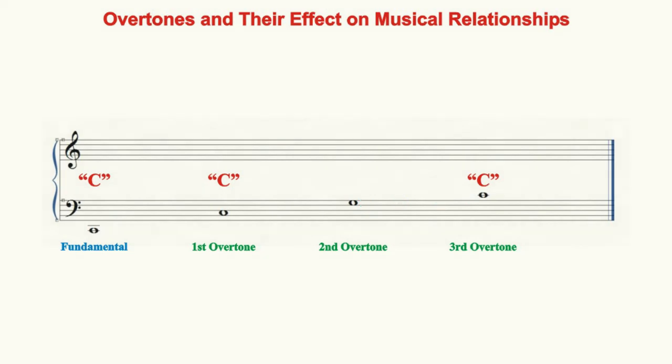The first musical relationship that becomes apparent from these observations is that the prevalence of the fundamental tone sends a message to our ears that this tone has some particular significance. Our ears interpret these repeated fundamental overtones as anchor tones to which all the other overtones are connected, around which all the other overtones revolve, and to which all the other overtones seek to return.